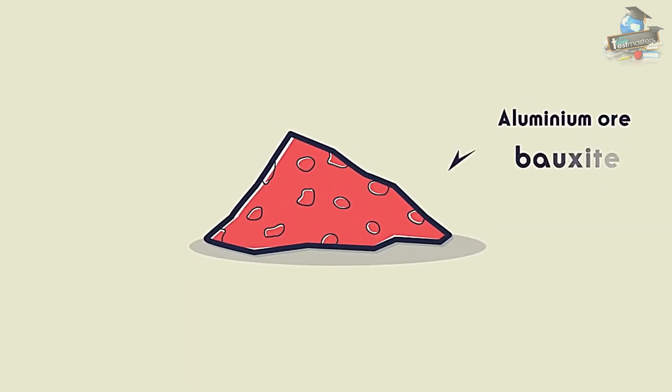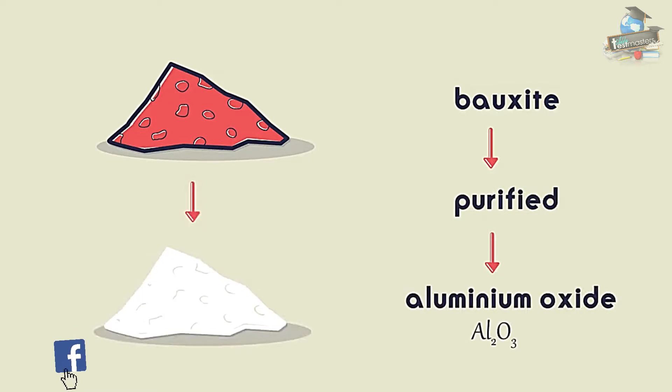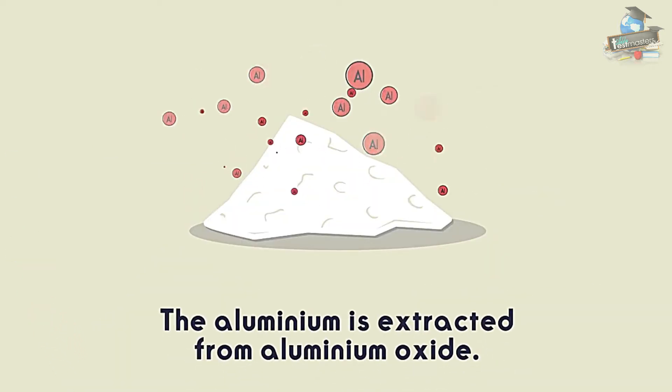The aluminium ore is called bauxite. Bauxite is purified to yield aluminium oxide, which is a white powder. Aluminium is then extracted from the aluminium oxide.